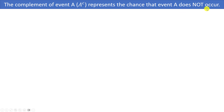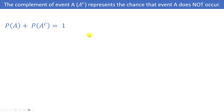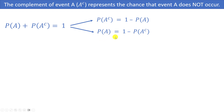The complement of event A, represented as A with a superscript C, is the chance that event A does not occur. The rule is: P(A) + P(A^c) = 1. For example, if A is the chance it rains today, then A^c is the chance it doesn't rain — one of those must happen. Using algebra: P(A^c) = 1 − P(A), and P(A) = 1 − P(A^c). These two formulas together are called the complement rule.